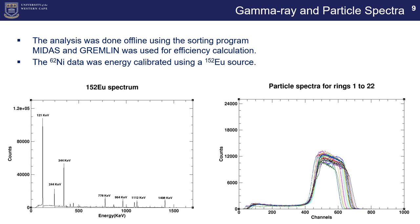All right, so next we move on to the data analysis. This data analysis was done offline using the sorting program MIDAS, and Gremlin was used particularly for the efficiency calculation. Following that, we look at the nickel 62 data which was energy calibrated using the 152 Europium source. On the left hand side of the picture that is the source we use to calibrate the energy, and on the right hand side we're looking at a particle spectra for rings 1 through 22 of the silicon detector. Now we had noticed that two of the rings were not working and we had to then not use those and follow only through with rings from 1 to 22.